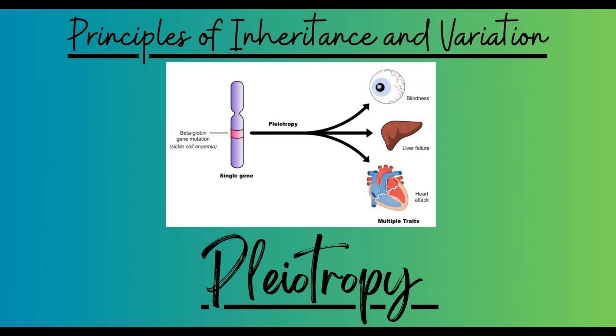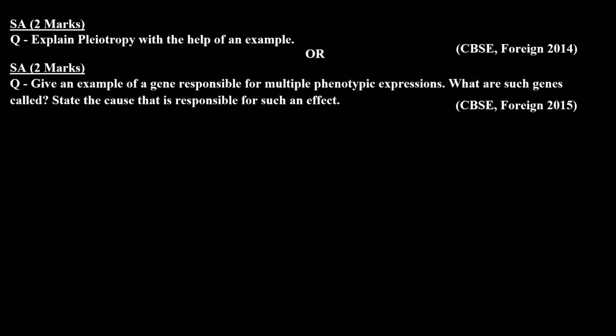Hello everyone. We are discussing previous year questions of the chapter Principles of Inheritance and Variation, and the topic Pleiotropy. In today's session we are going to discuss a question which was asked in the CBSE board in different years and in different forms. The first form is a short answer type question for two marks, which was asked in the CBSE board examination 2014.